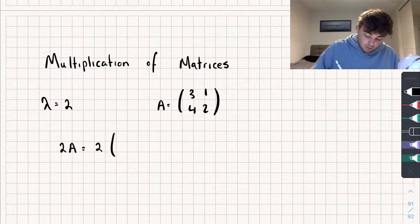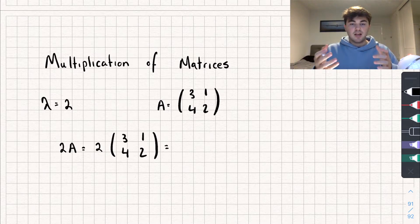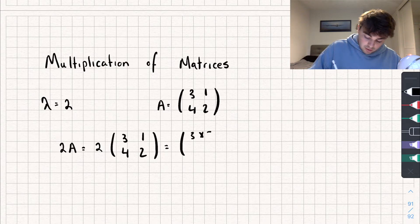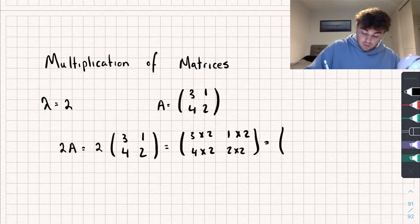That's going to be the same as 2 lots of the matrix [3, 1; 4, 2]. And to work this out, all we're going to do is multiply each element of matrix A by the scalar. So we're going to get 3 times 2, 1 times 2, 4 multiplied by 2, and 2 multiplied by 2. So if we work this out, we're going to get [6, 2; 8, 4].